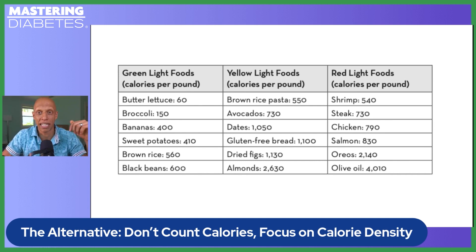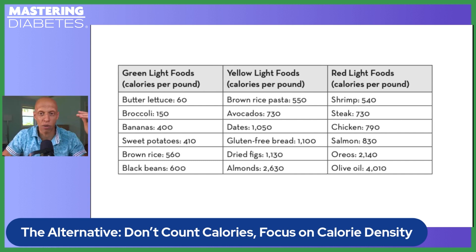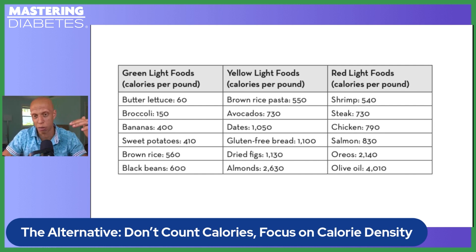And then finally, in the red light category, we have foods like shrimp, steak, chicken, salmon, Oreos, and olive oil — spanning anywhere from 540 calories per pound to north of 4,000 calories per pound in the case of olive oil.